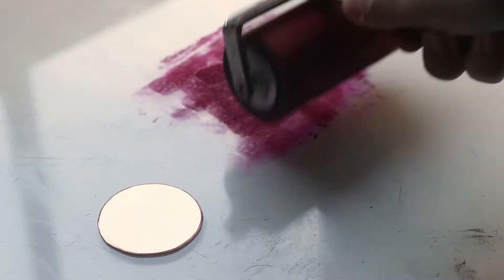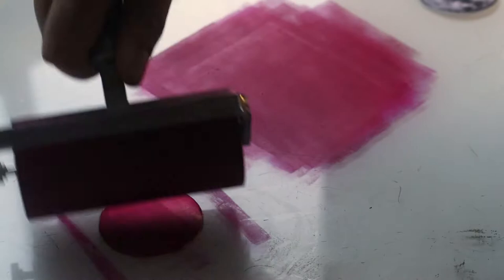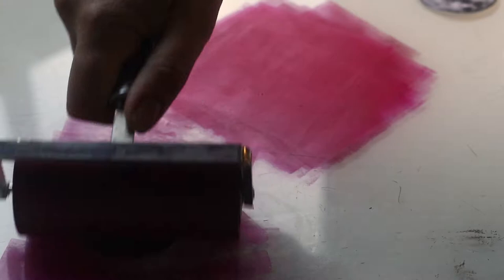When your plate is degreased, roll out a little of the Big ground onto your slab with a roller like you're rolling out ink for a lino cut print, and then roll it evenly onto the plate in a few different directions.